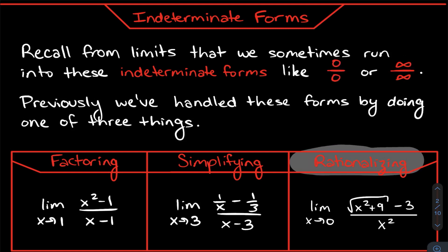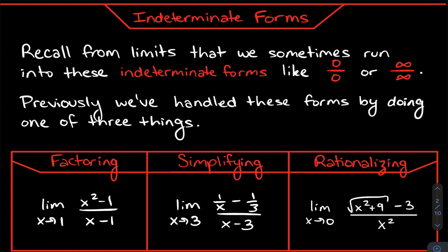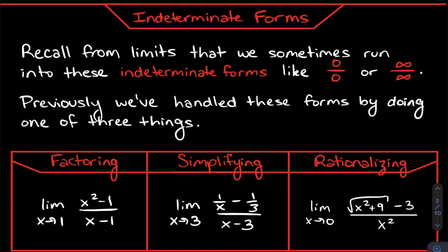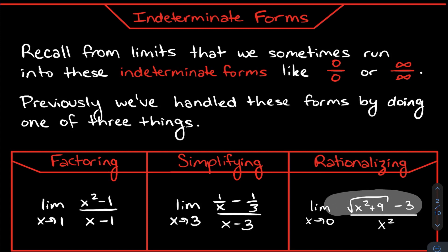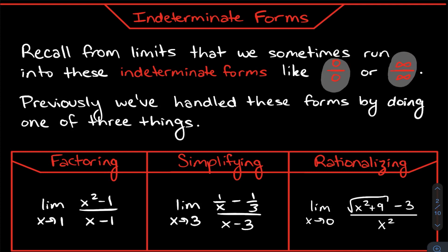The third method is rationalizing — used when we have a radical. For example, a zero over zero case where plugging in zero shows the radical is trapping something. We multiply by the conjugate on top and bottom, flipping the sign to a plus, which gets rid of the radical and frees up the expression. That gets us out of the zero over zero or infinity over infinity case.